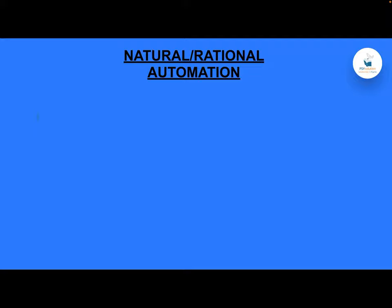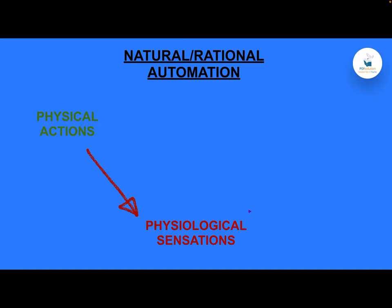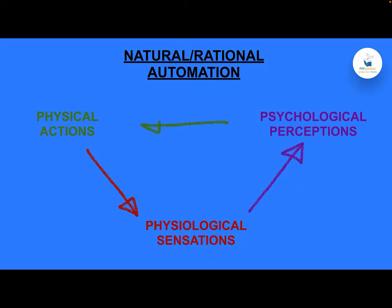So here what we see: a physical action brings some physiological sensation, and that physiological sensation brings some psychological perceptions. Those psychological perceptions then naturally bring some newer physical actions. This automation goes on naturally and doesn't need any extra energy investment from our side — it happens automatically, leading to conservation of energy.